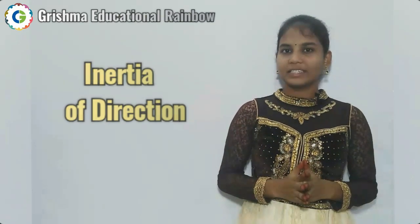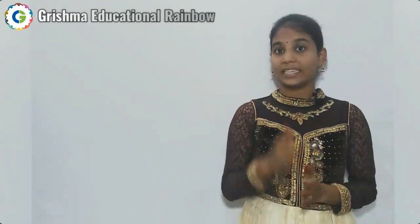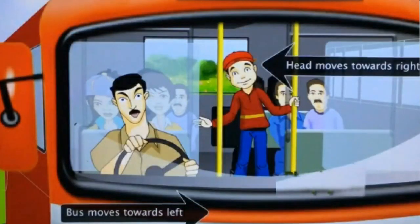Now let us understand the third type: inertia of direction. Inertia of direction can be defined as the inability of an object or body to change its direction of motion by itself. When a bus moves along a left curve, our body moves along with the bus, but our head moves in the opposite direction — to the right — because until that moment our head was moving in the right direction. Suddenly when the bus curves left, our head takes some time to change its direction. This is what inertia of direction says.